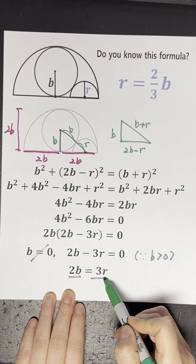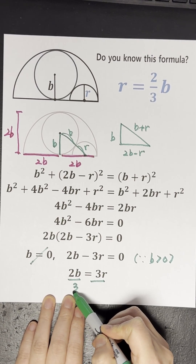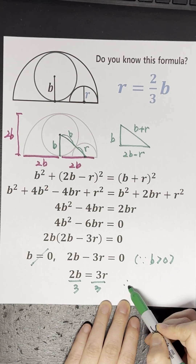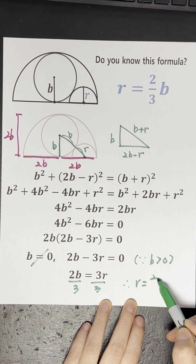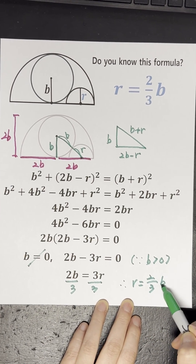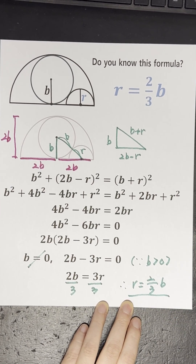Further simplifying gets us R equals 2 over 3B. Click on the linked video in the comments for further details.